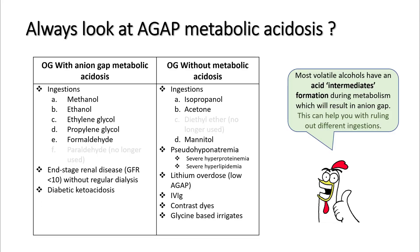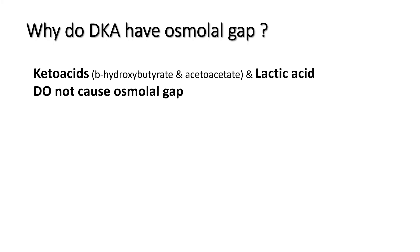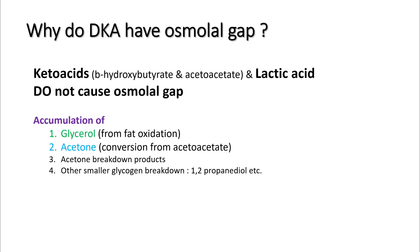Always look at anion gap metabolic acidosis when measuring osmolal gap, as this can help rule in different ingestions. Some volatile alcohols have acidic intermediates that increase your anion gap — like methanol, ethylene glycol, and propylene glycol — while other alcohols do not have acidic intermediates, like isopropanol or acetone. Patients with DKA can have an osmolal gap; ketoacids and lactic acids themselves do not cause an osmolal gap, but in DKA you have accumulation of glycerol from fat oxidation and acetone from acetoacetate conversion and other acetone breakdown products. So DKA patients can have a large osmolal gap as well.